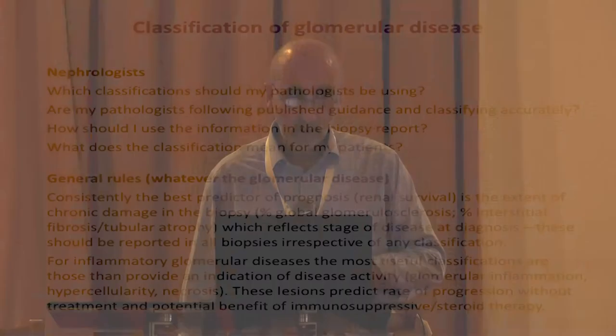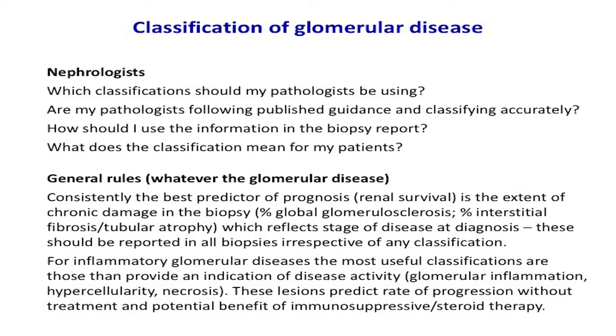Most classifications I don't use myself because they haven't been developed in an evidence-based way, and evidence collected later frequently doesn't support them. From your perspective, you'll be asking: what classifications do I want my pathologists to use? And maybe at the end of this talk, you'll be thinking: are my pathologists using the published guidance correctly? Do I really trust them to classify these renal biopsies accurately? When you've got their report, you're going to want to know how to use the information, and particularly what does this classification mean for my patient?